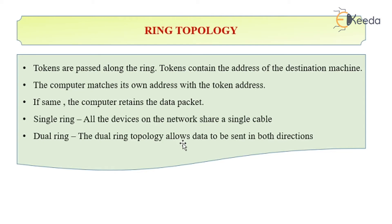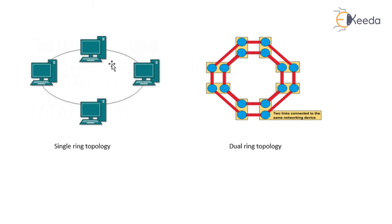There are two kinds of ring topologies. One is single ring, where all the devices on the network share the single cable. The second one is the dual ring. The dual ring topology allows data to be sent in both directions. As you can see in the diagram, single ring topology and dual ring topology where communication takes place in both directions.